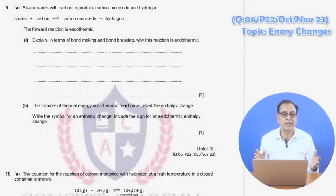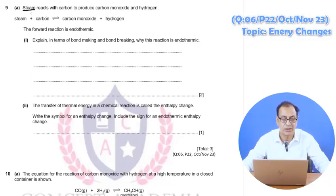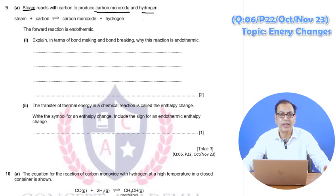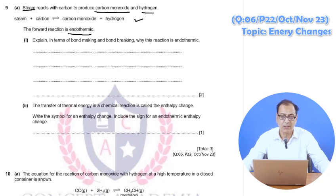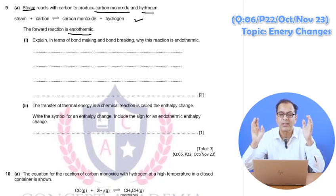The next question is that steam reacts with carbon to produce carbon monoxide and hydrogen. The forward reaction is endothermic — this is a very important point. Explain in terms of bond making and bond breaking why this reaction is endothermic.